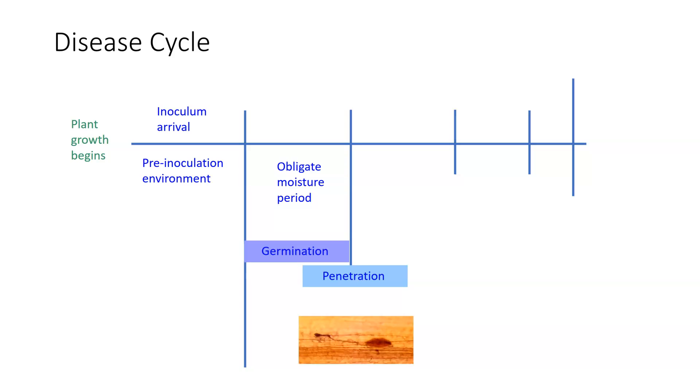Over here this shows you a spore that is germinated and is now penetrating in. Then we get what we call colonization. In colonization we are talking about a post-moisture environment. Once the pathogen gets into the tissues, it no longer needs to worry about what the environment on the outside is, as long as it's not slowing down the pathogen and destroying it.